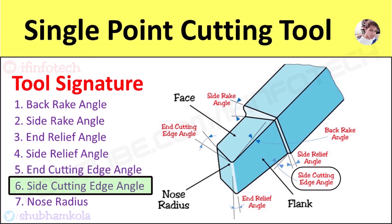Next is side cutting edge angle. It is the angle between the straight cutting edge on the side of the tool and the side of the shank. It is responsible for turning the chip away from the finished surface.